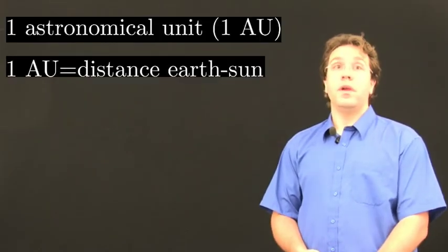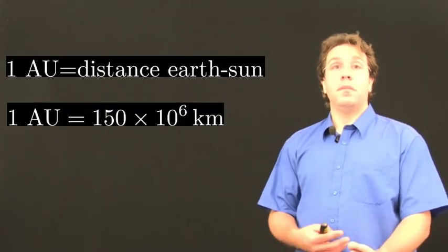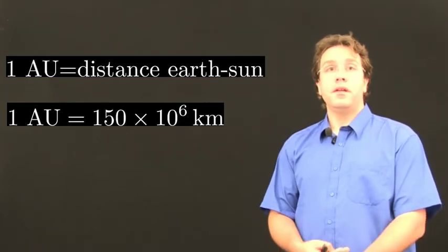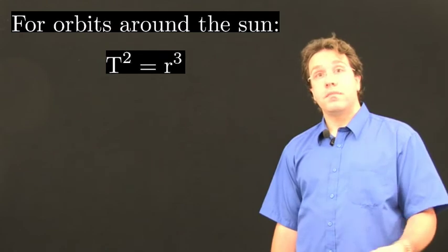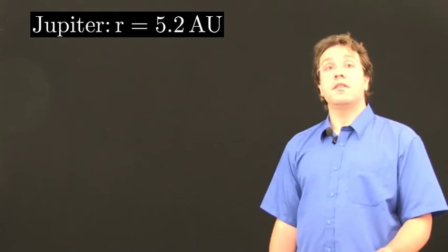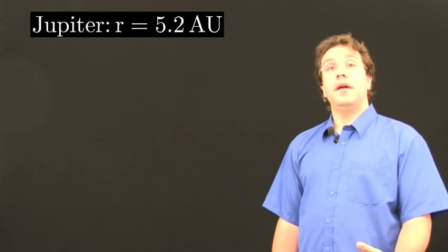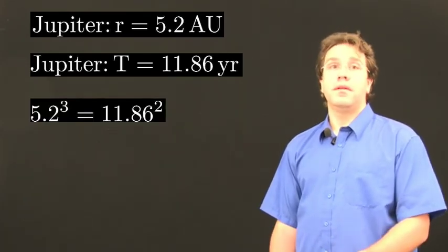For the planets in our solar system we use natural units: the distance from the Earth to the Sun is one astronomical unit — equal to 150 million kilometres — and the orbital period of the Earth is one year. When we measure orbital periods in years and distances in astronomical units, the constant terms vanish, and T squared equals R cubed. For example, Jupiter is about 5.2 astronomical units from the Sun, with an orbital period of 11.86 years — and indeed 5.2 cubed equals 11.86 squared. So that's Kepler's third law of planetary motion confirmed.